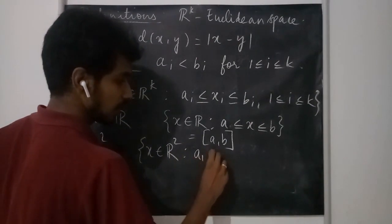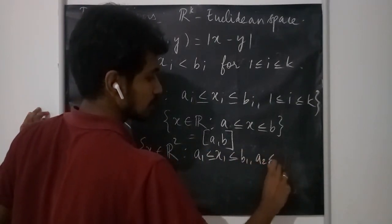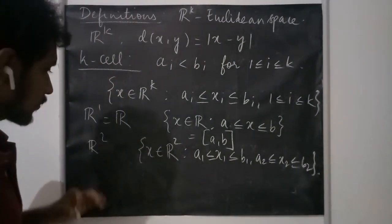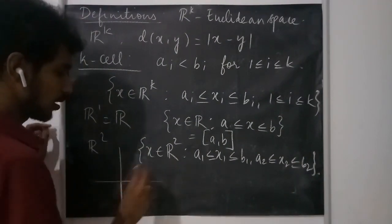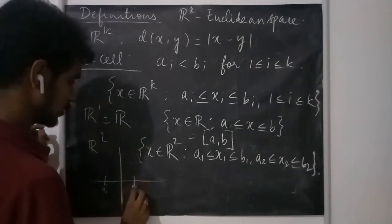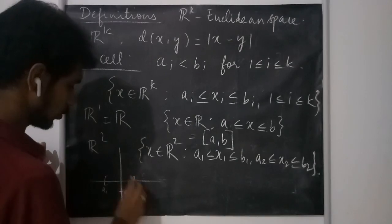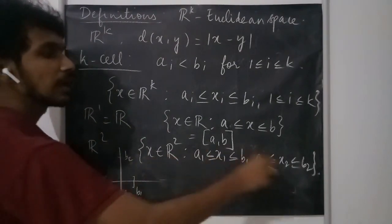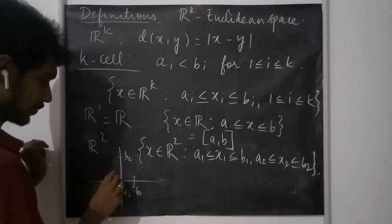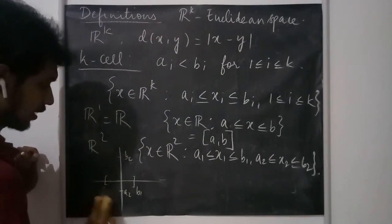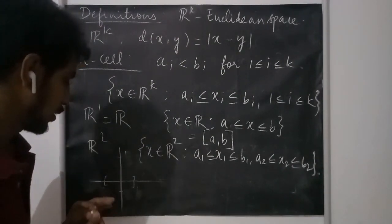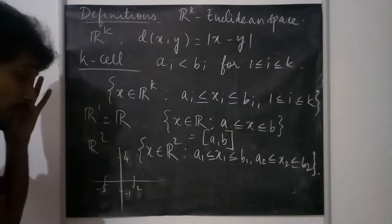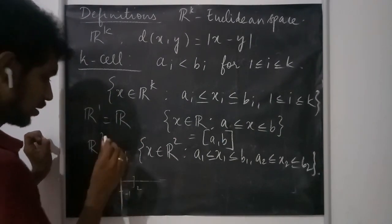In R2, the k-cell considers elements satisfying a1 ≤ x1 ≤ b1 and a2 ≤ x2 ≤ b2. Let me draw a small diagram. Suppose this is a1 and this is b1, and this is a2 and this is b2. For specific points, let me choose a1 = -1, b1 = 4, and then a2 = 2, b2 = -3.